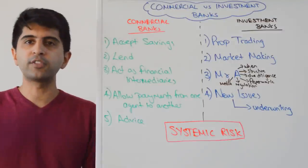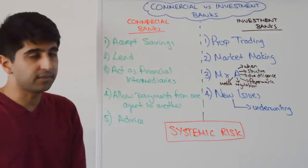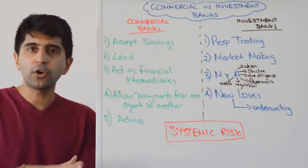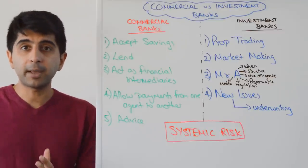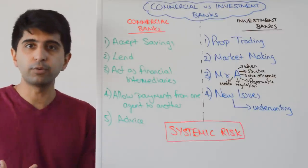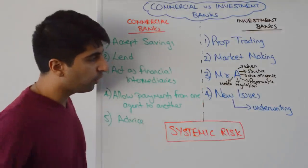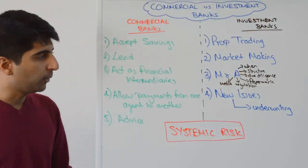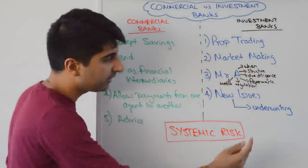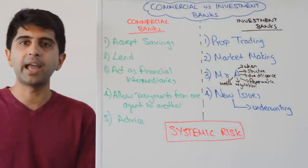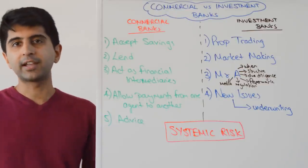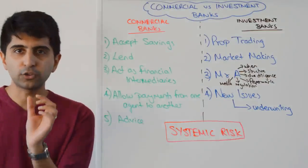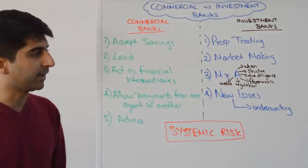Investment banks also assist with new issues — if companies want to issue bonds or shares to raise finance, they can go to an investment bank for help. Investment banks can put them in contact with potential buyers, publicize the offering, write up and issue the securities on their behalf, and literally make brochures to sell bonds and shares for the issuers. They can also get involved in underwriting: if nobody wants to buy the new issues, investment banks can buy them all up on behalf of the company and then charge a percentage fee, making huge sums of money.